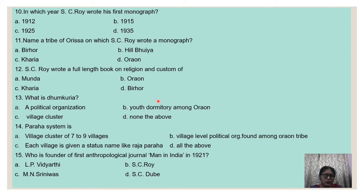Who is the founder of the first anthropological journal, Man in India, in 1921? The answer is S.C. Roy. This concludes all the objective questions based on S.C. Roy.